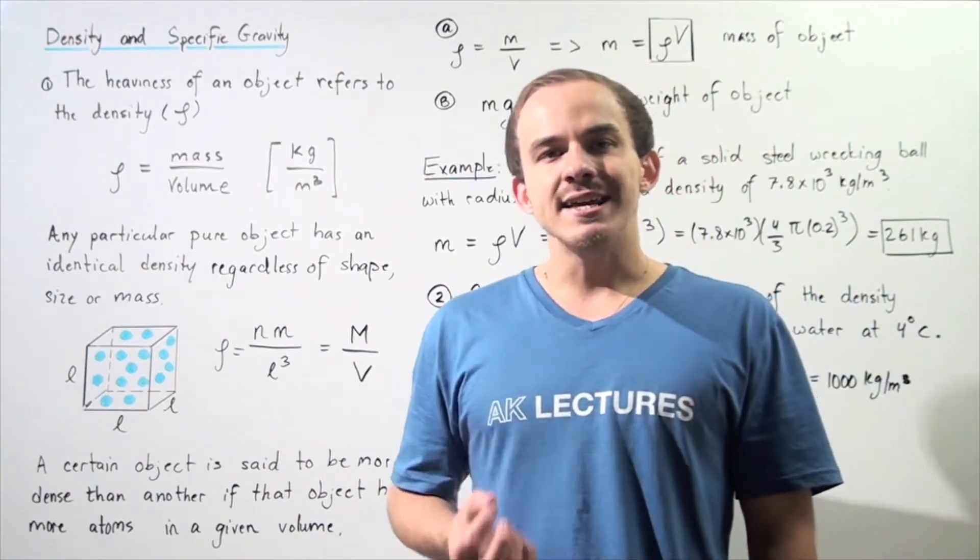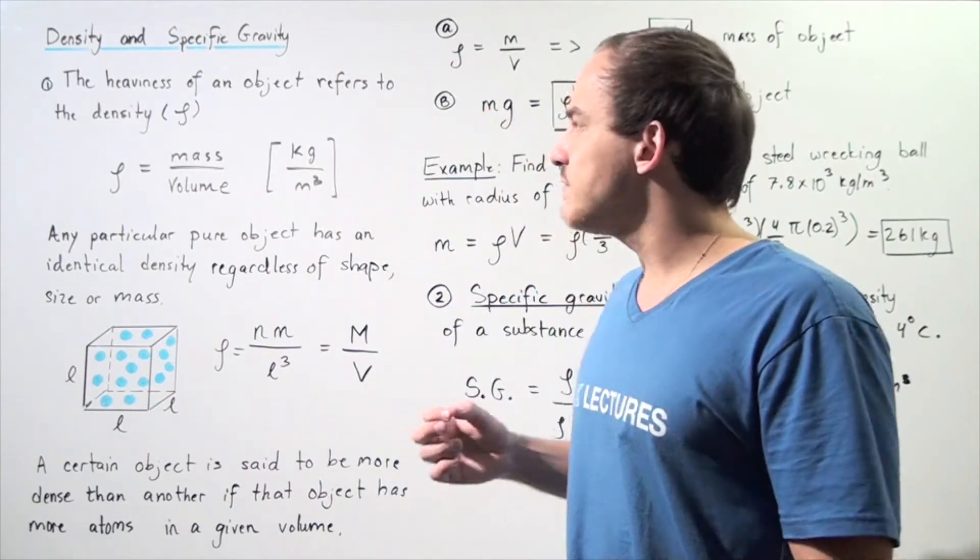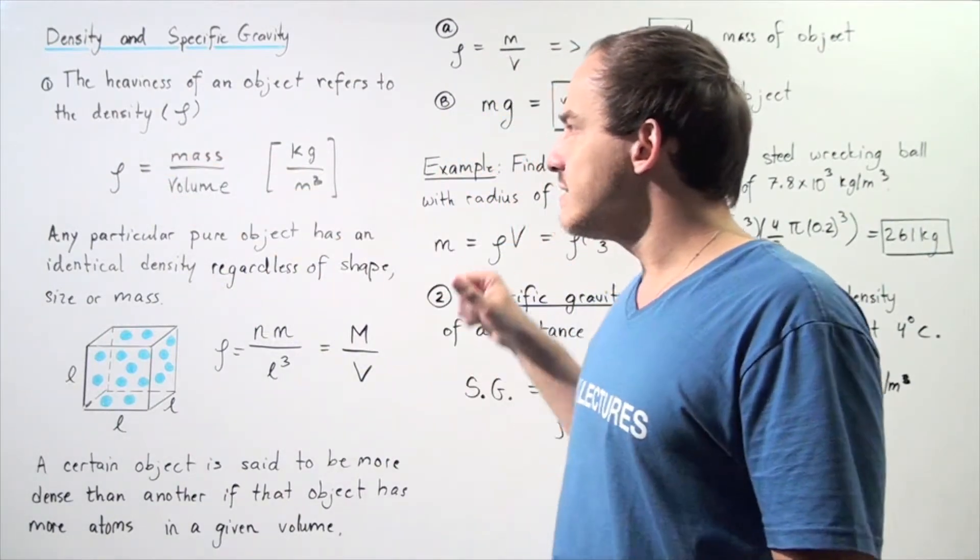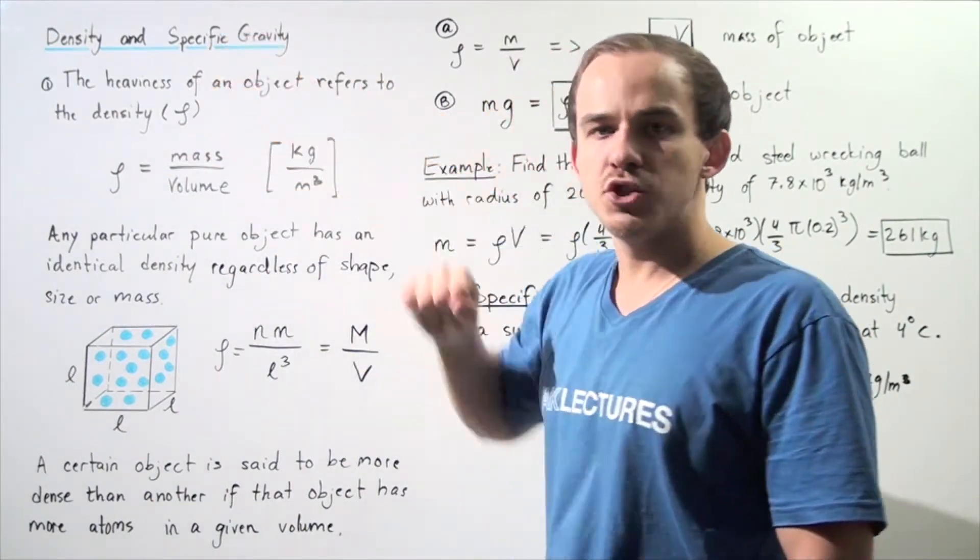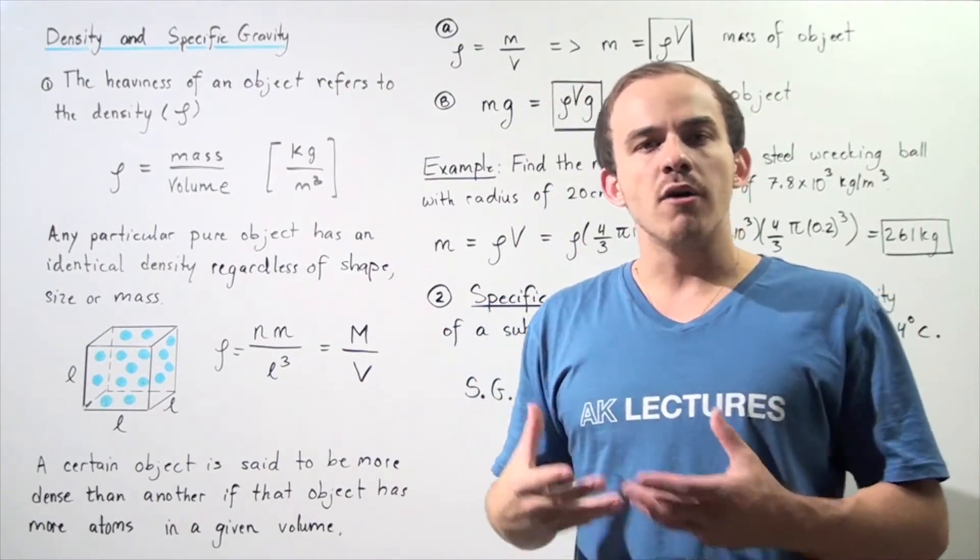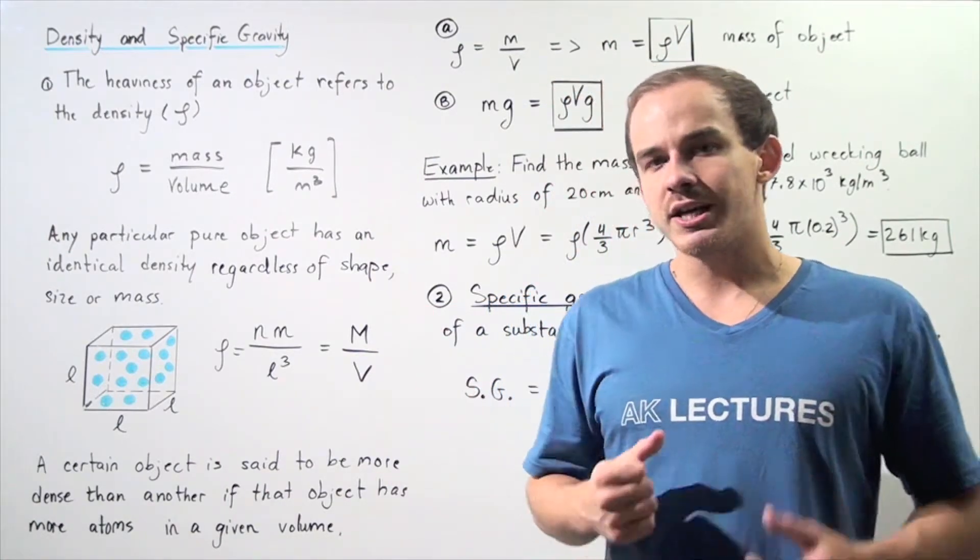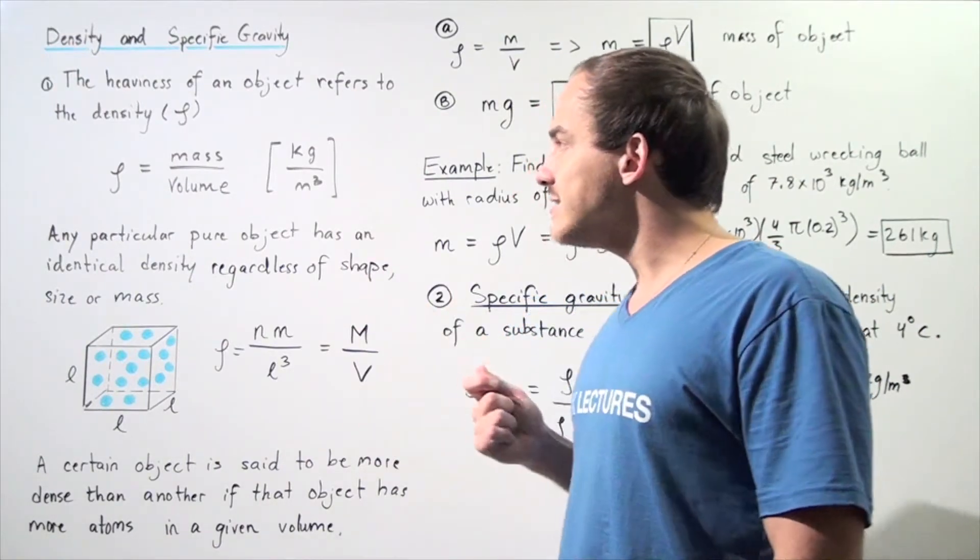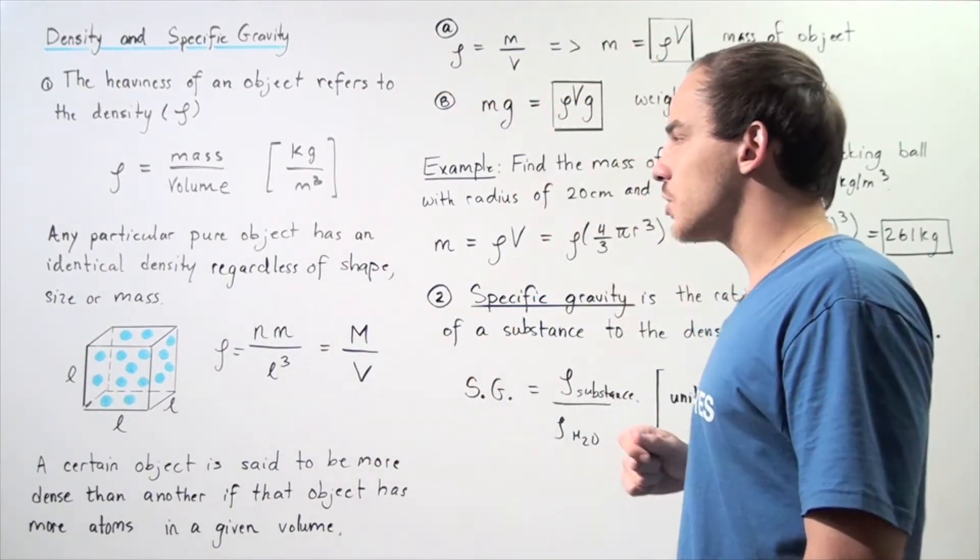Density is an intensive property given by the Greek letter rho. The formula for density is mass of that object in kilograms divided by the volume of the object in meters cubed. The units of density are kilograms per meter cubed.